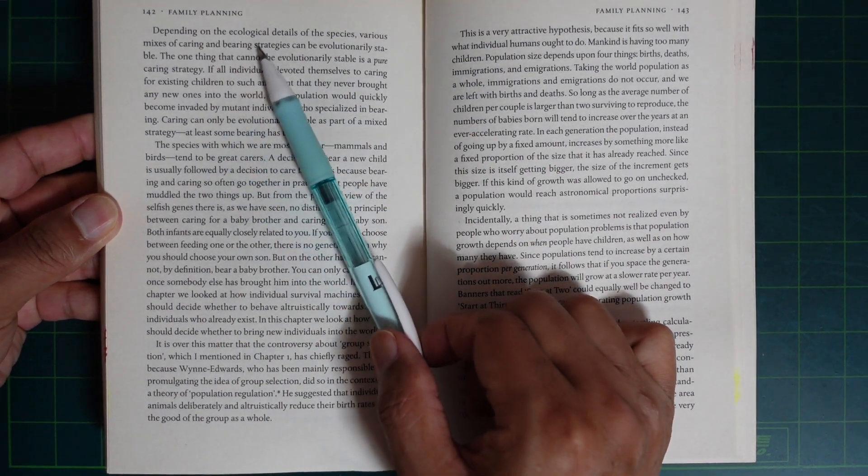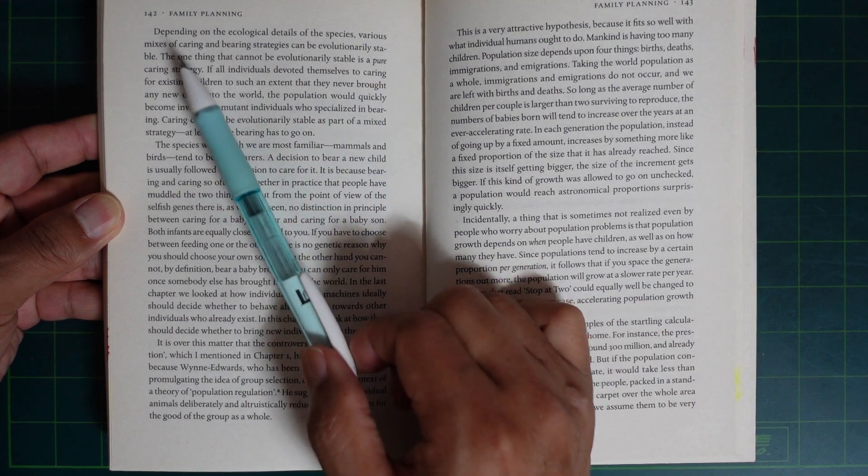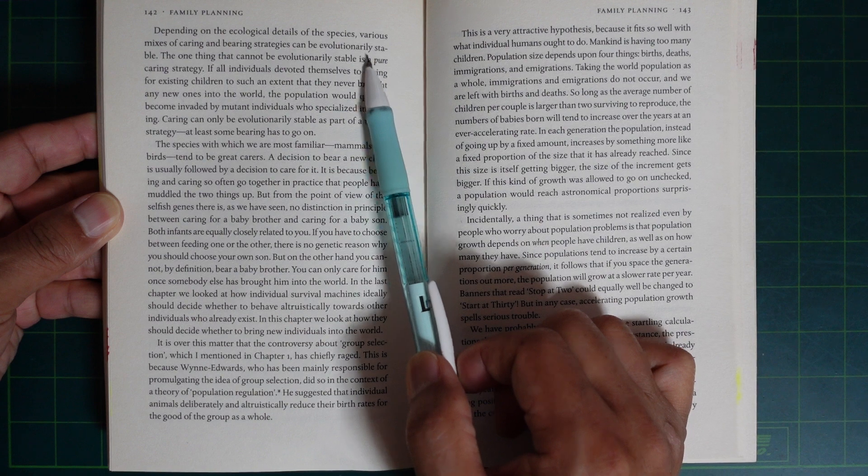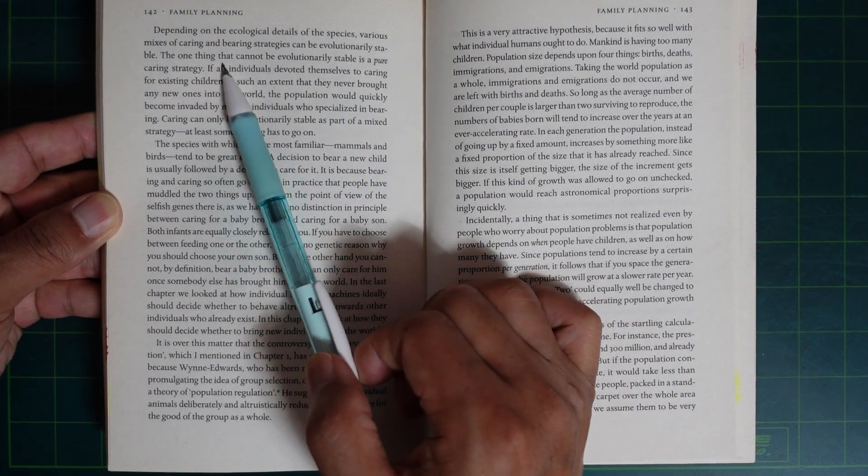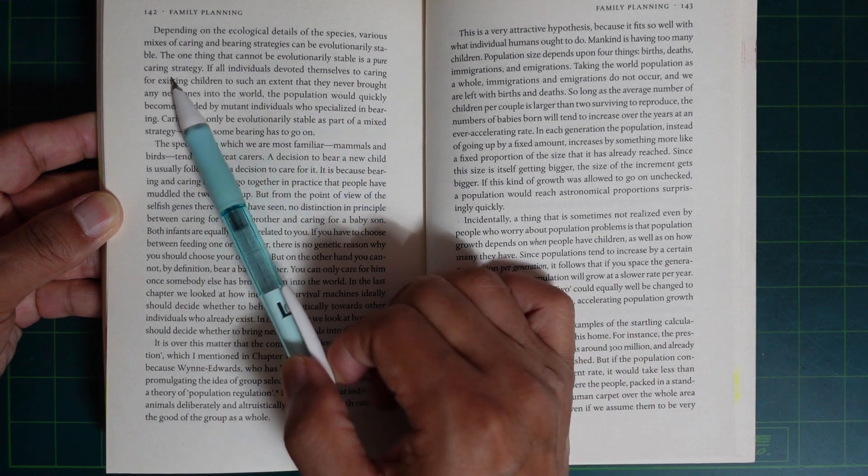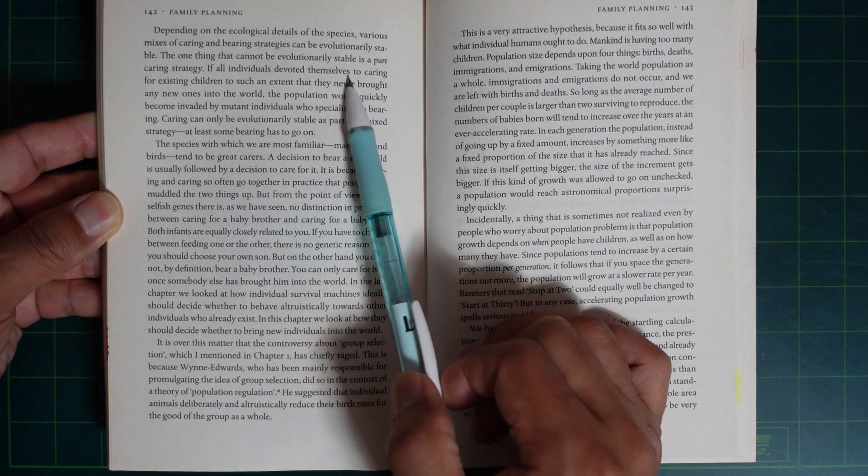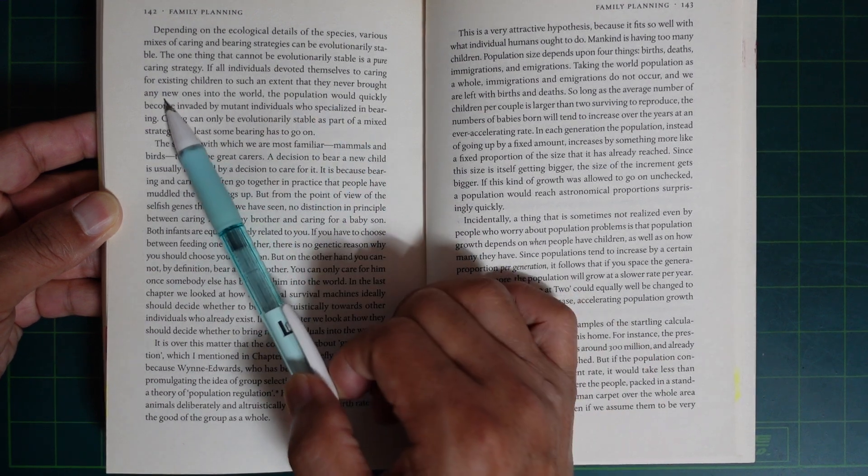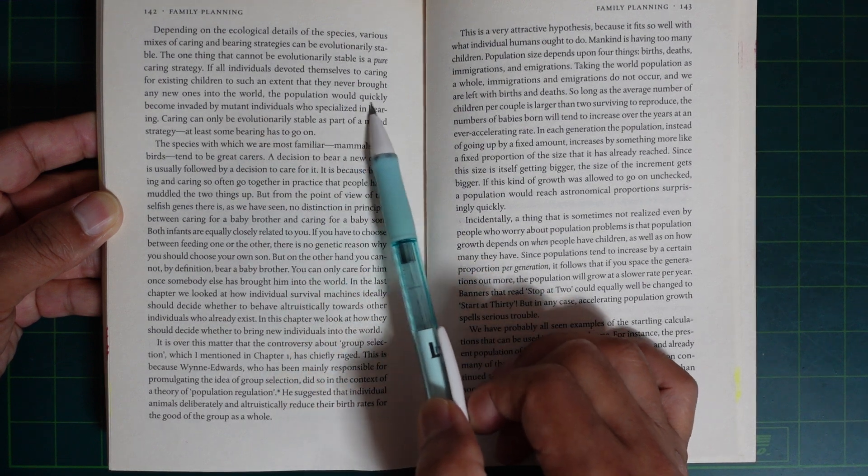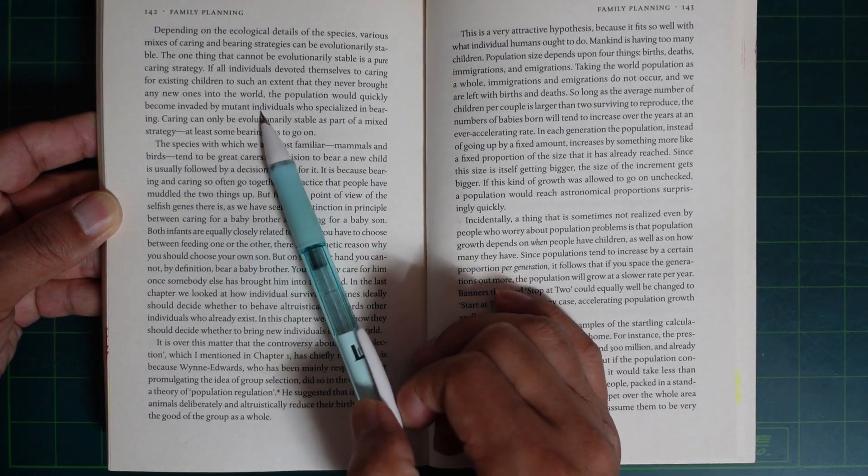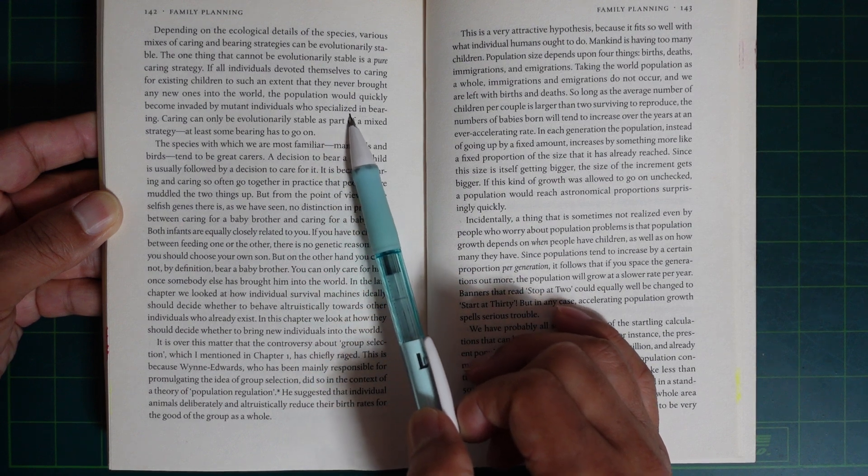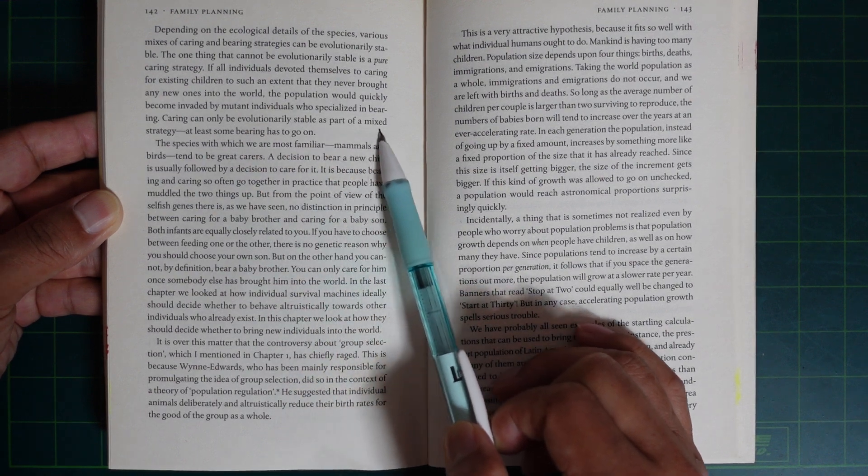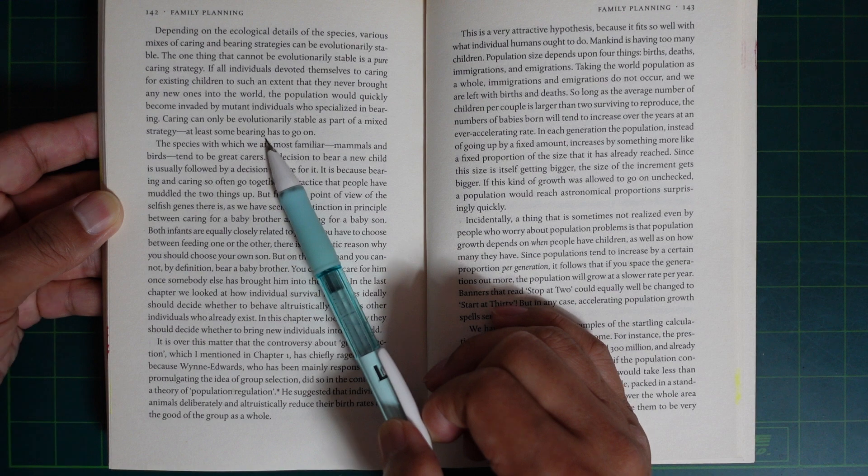Depending on the ecological details of the species, various mixtures of caring and bearing strategy can be evolutionarily stable. The one thing that cannot be evolutionarily stable is pure caring strategy. If all individuals devoted themselves to caring for existing children to such an extent that they never brought any new ones into the world, the population would quickly become invaded by mutant individuals who specialized in bearing.